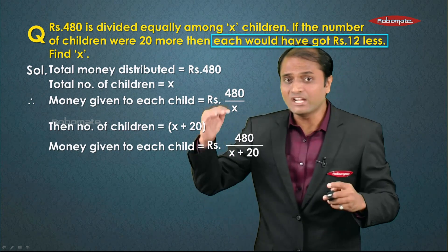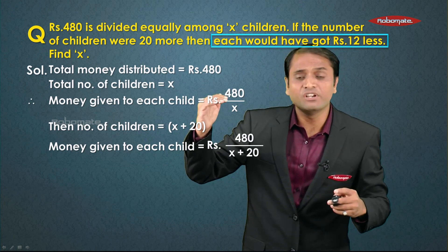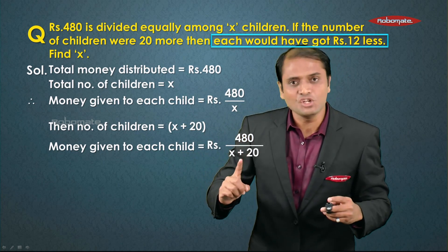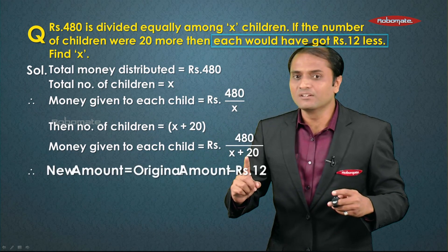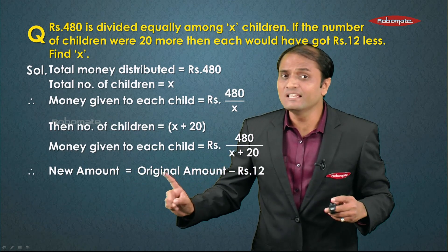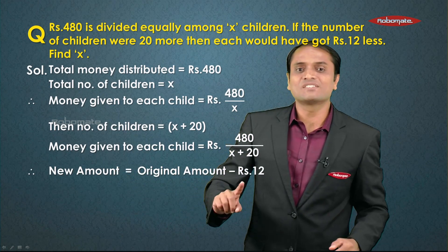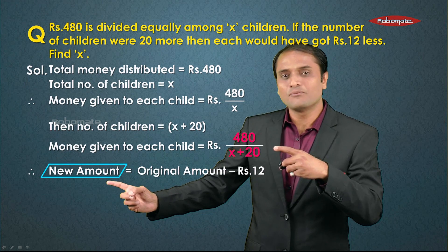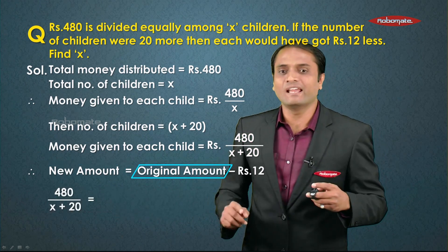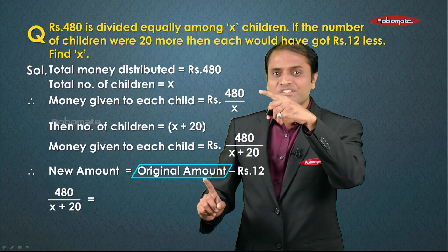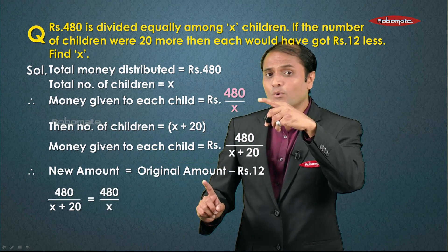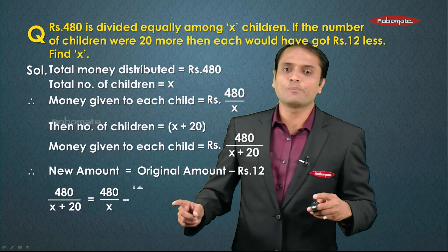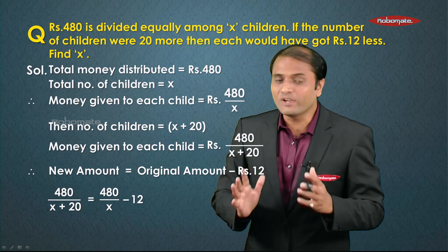The problem says each child would have got rupees 12 less, meaning the new amount equals the original amount minus rupees 12. So the equation becomes: 480 upon (x plus 20) equals 480 upon x minus 12. This is how the equation is formed.